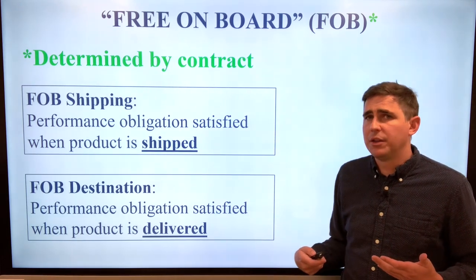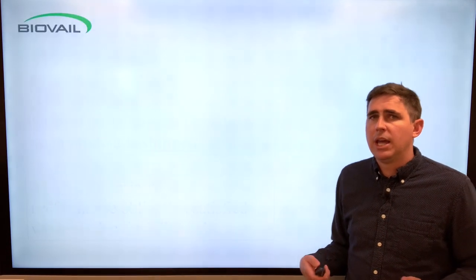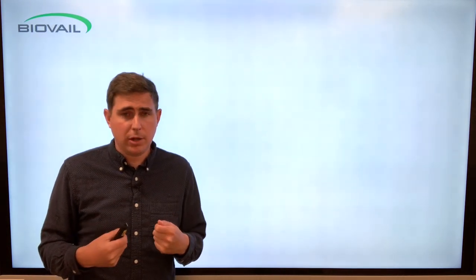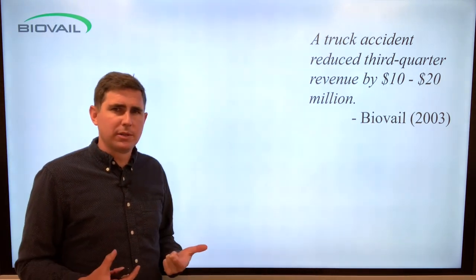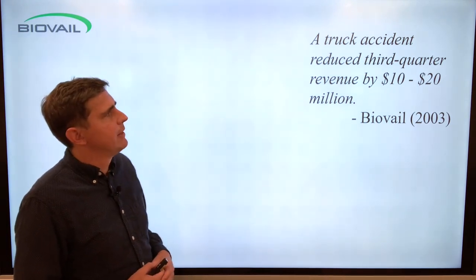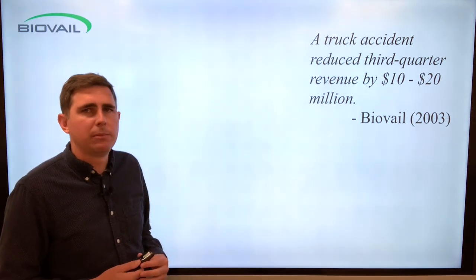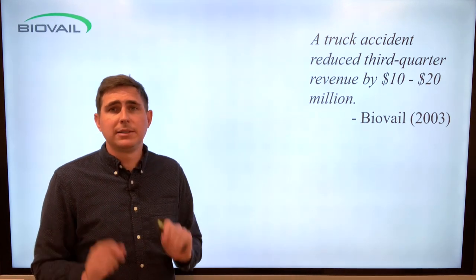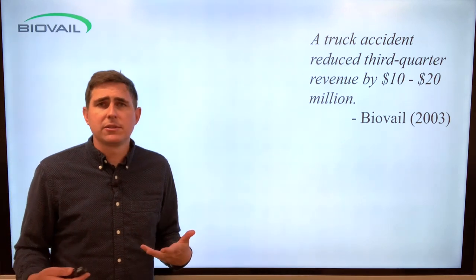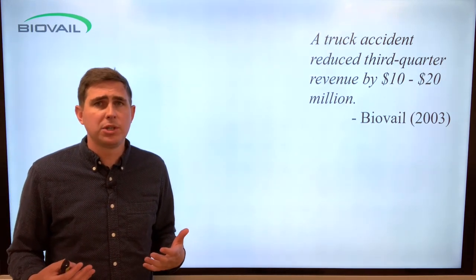Let's exercise our knowledge of these two options using an example that happened back in 2003 with a company called BioVail. BioVail sells pharmaceuticals — they manufacture the pharmaceuticals, put them on a truck, and ship to a customer. In their third quarter of 2003, they didn't perform well. They attributed this bad performance to a truck accident that reduced third quarter revenue by 10 to 20 million dollars. Let's look at the details of the shipment and apply our knowledge of FOB shipping point and destination point.